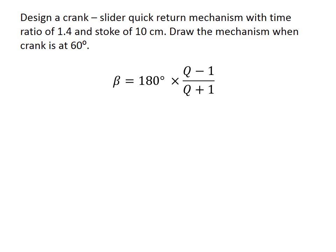The first step is to find the imbalance angle. Beta equals 180 degrees times Q minus 1 divided by Q plus 1. Since the time ratio Q equals 1.4, beta or the imbalance angle equals 30 degrees.